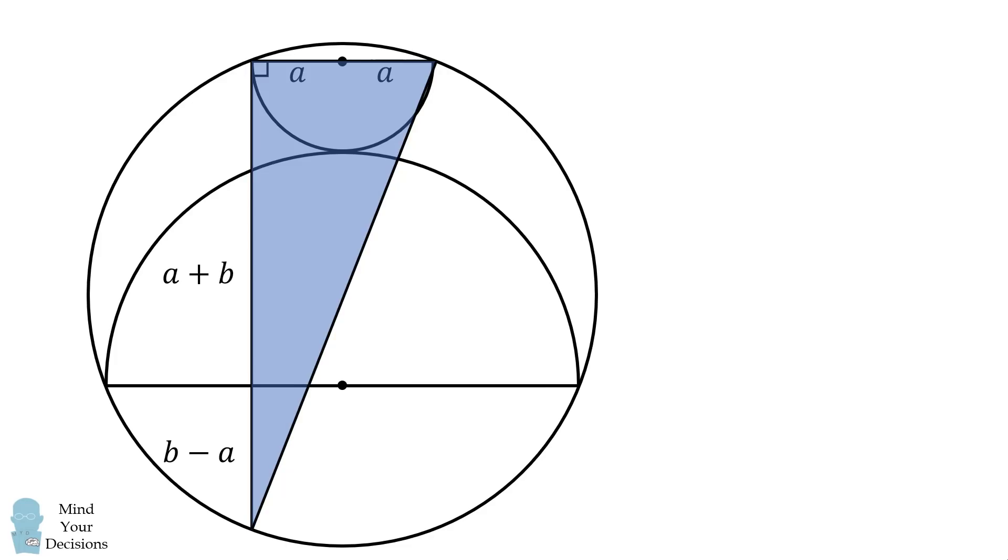Therefore the chord opposite this 90 degree inscribed angle will be a diameter of the circle. In other words, this chord passes through the center of the circle, and its length will be equal to 2 times the radius of the circle.